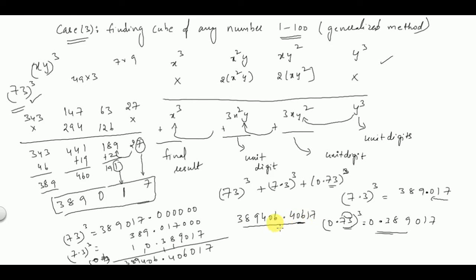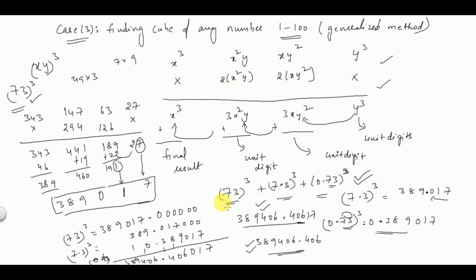If you truncate to three decimal places, the answer is 389406.406. This is how we solve cube problems when questions are asked in this manner. The general procedure lets you find the cube of any number using this method. If you like the video, please share with your friends and subscribe. Comment below the values of 84³ and 79³.